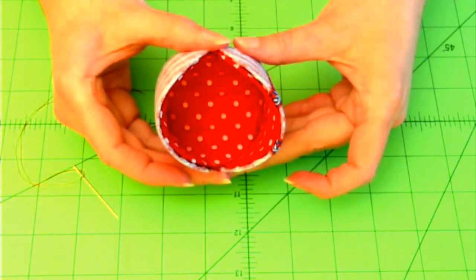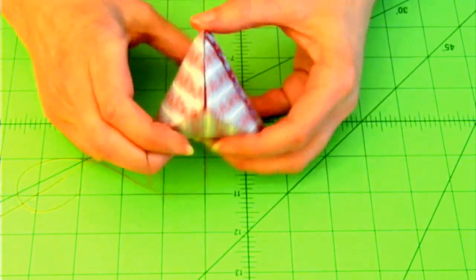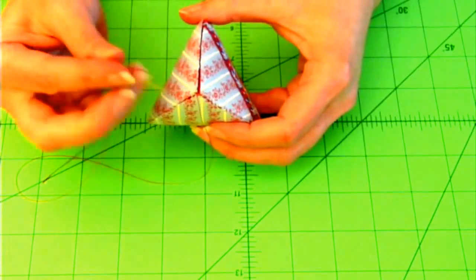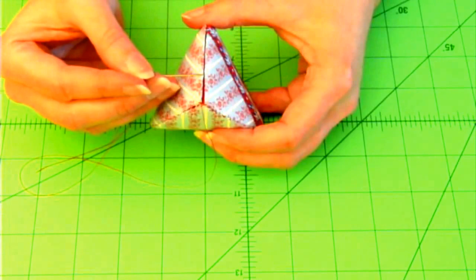So with those two sides sewn together, my case is beginning to take shape. My last two steps will be to come here to the corner points where the three pieces meet and actually sew these two sides together about a half an inch up.